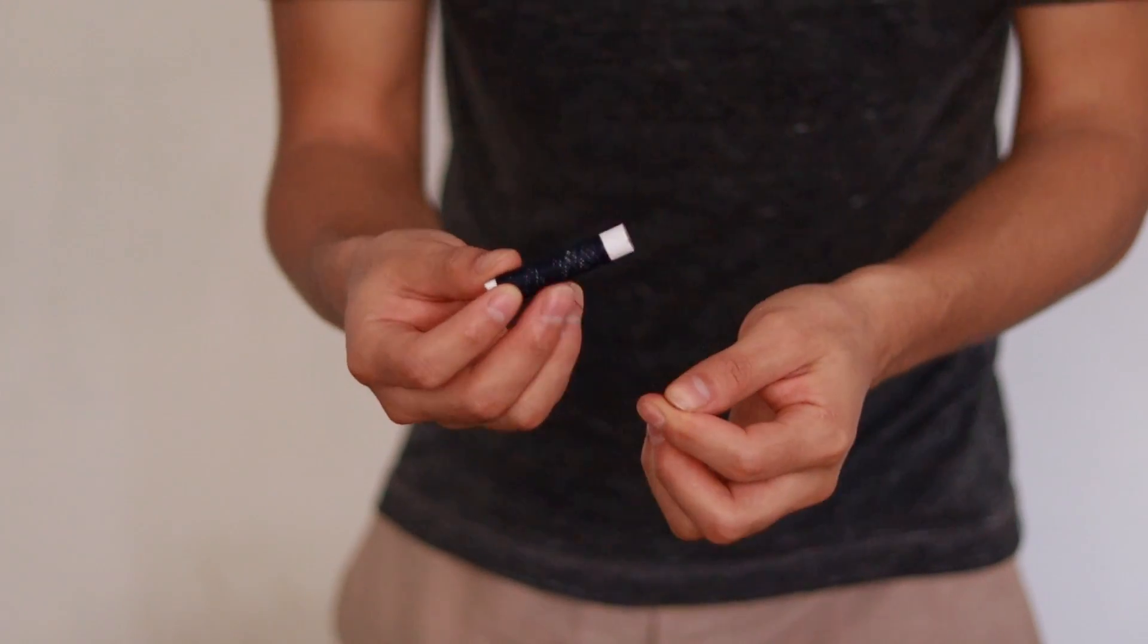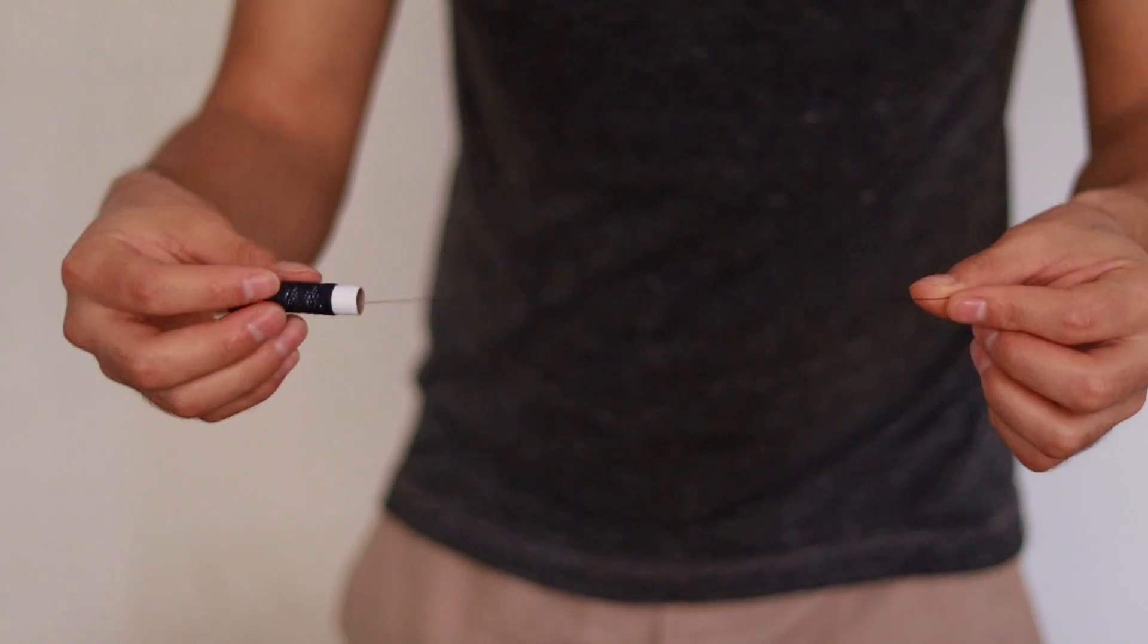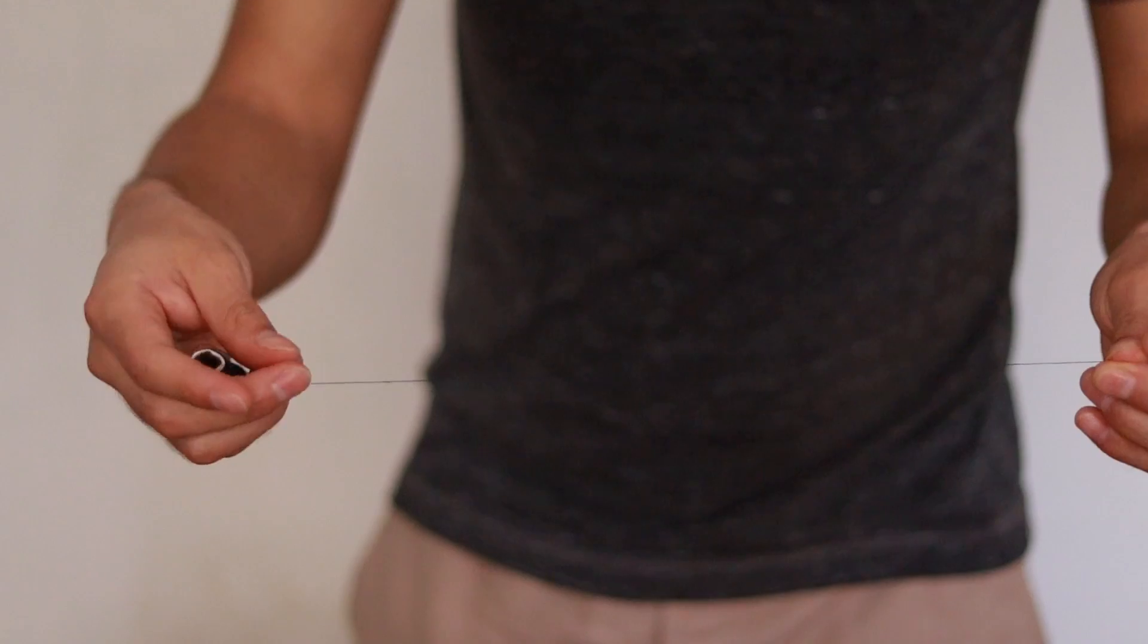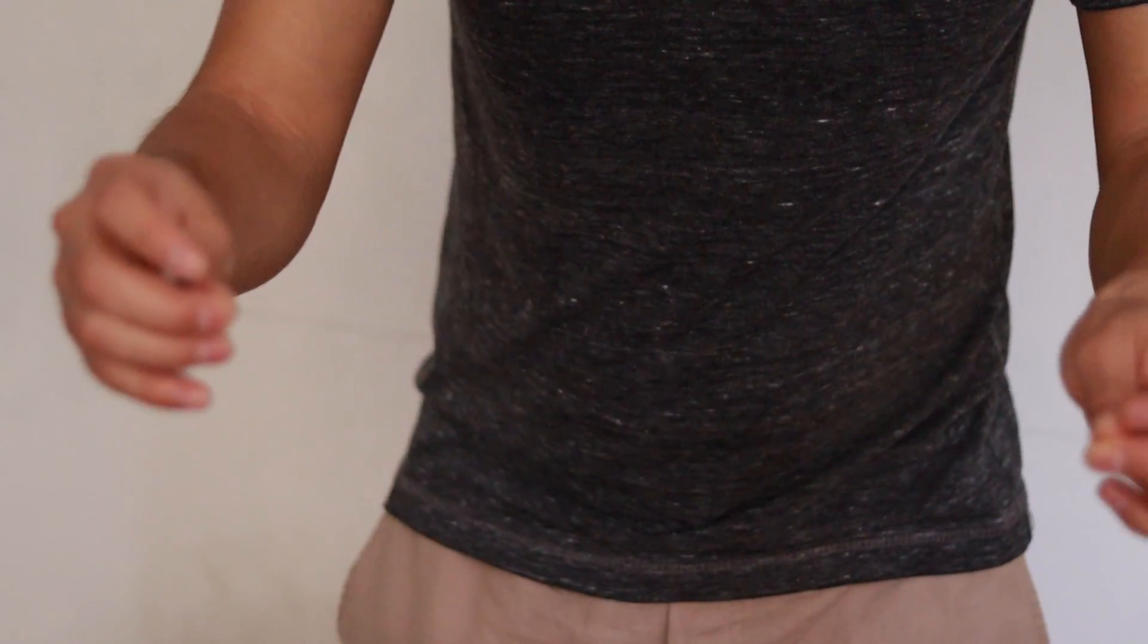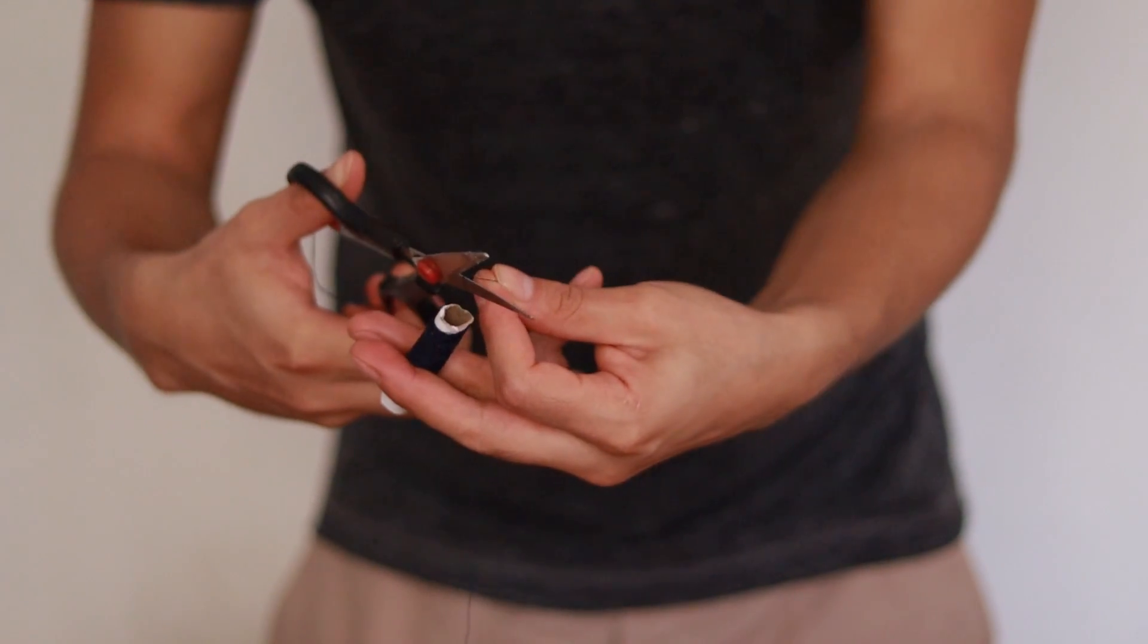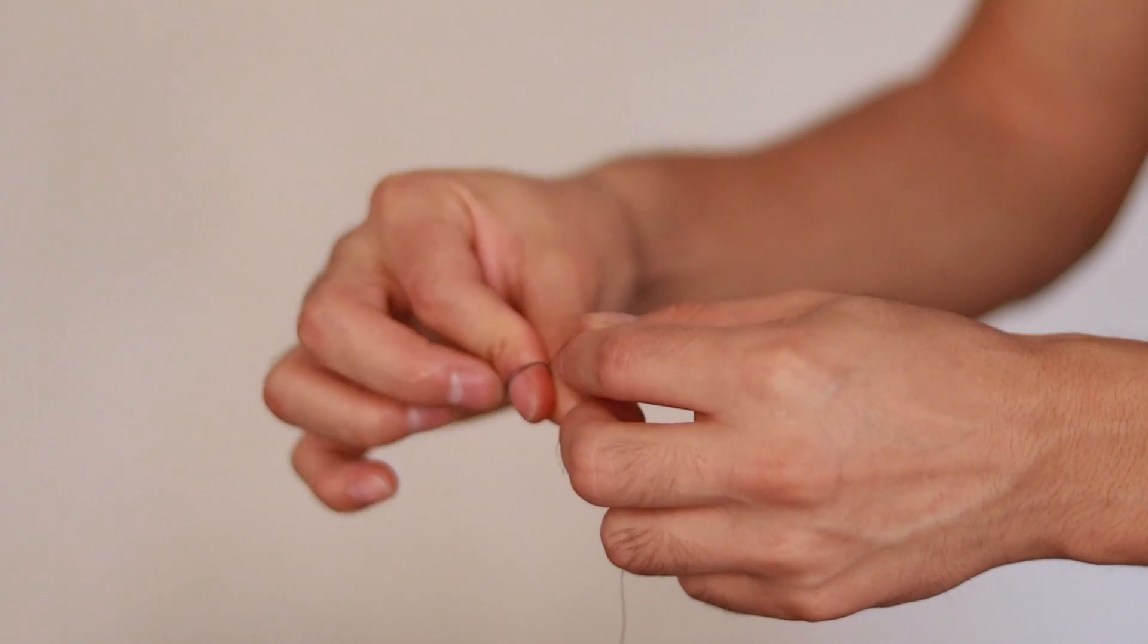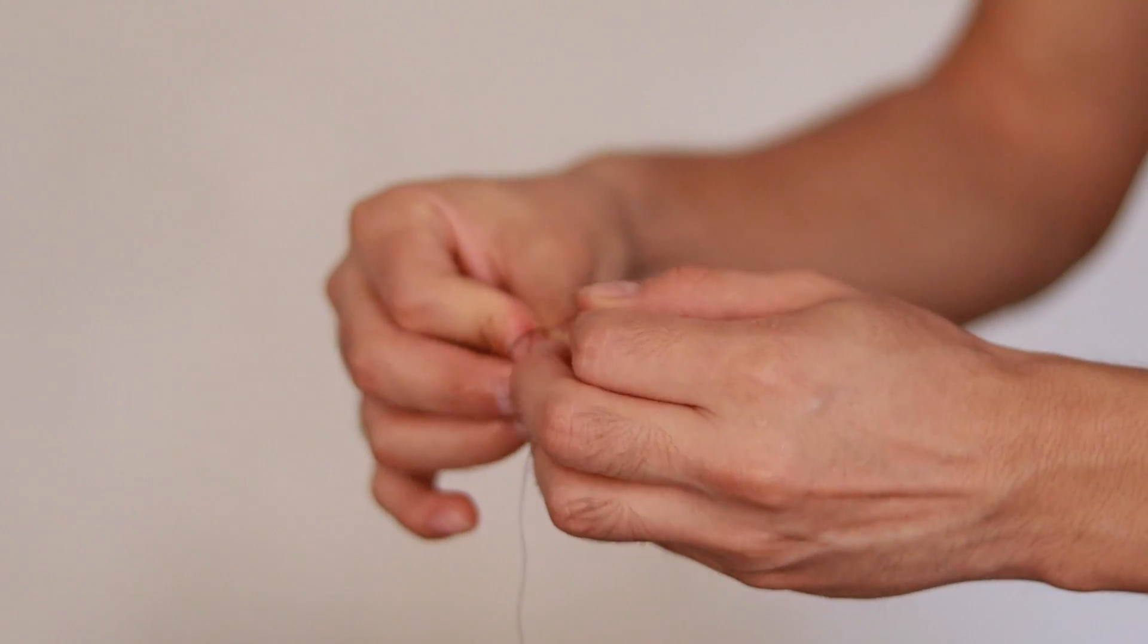We are going to take our thread and cut approximately 3 cm. At one end of the thread, we are going to tie a knot.